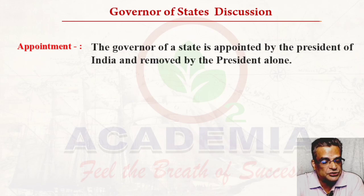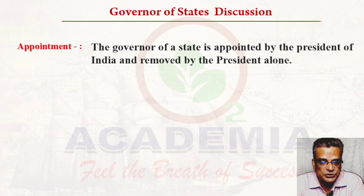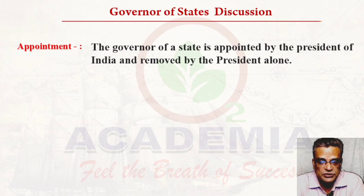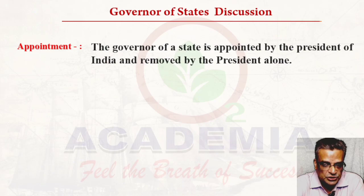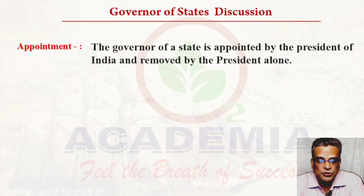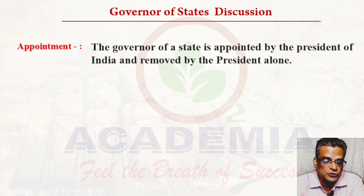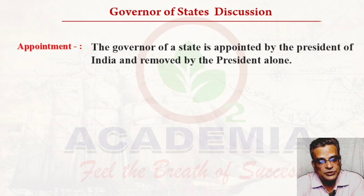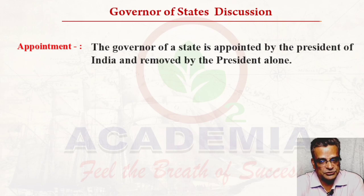To some extent it is restricted because the Governor is enjoying some discretionary powers. When the Governor is enjoying his discretionary powers, the Governor is not bound to follow the advice of the Chief Minister and the Council of Ministers. The President, on the other hand, is all the time bound to follow the advice of the Prime Minister and his Council of Ministers.